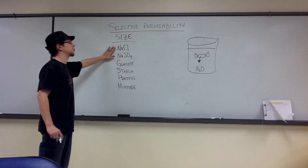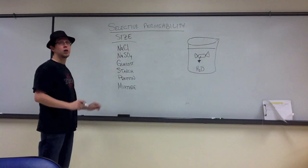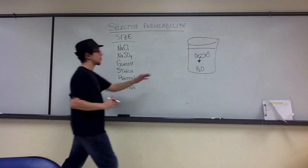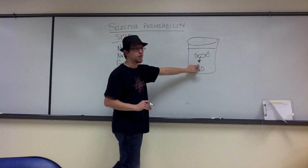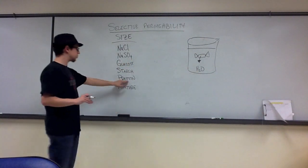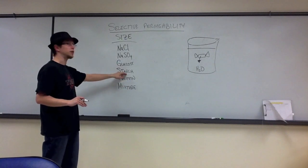So the smaller substances like your sodium chloride and your sodium sulfate are going to have a much easier time permeating the bag and winding up out here in the beaker than your larger substances like protein or starch.